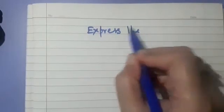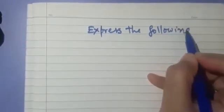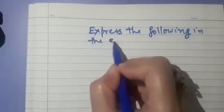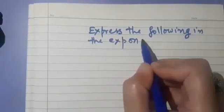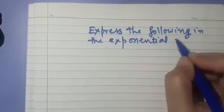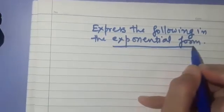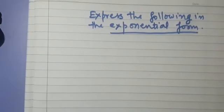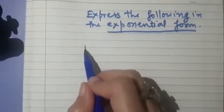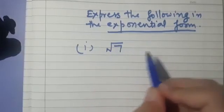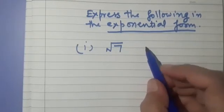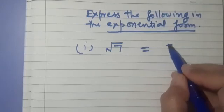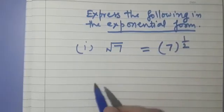The first question: express the following in the exponential form. For example, square root of 7 — how do you write it in exponential form? Very simple: 7 raised to the power 1 by 2.